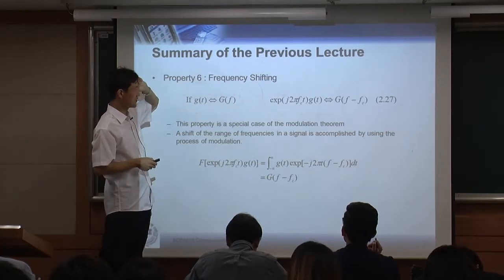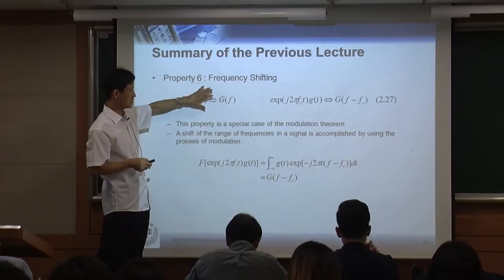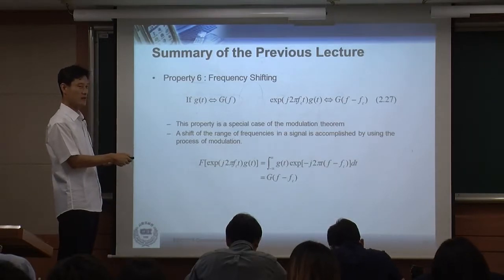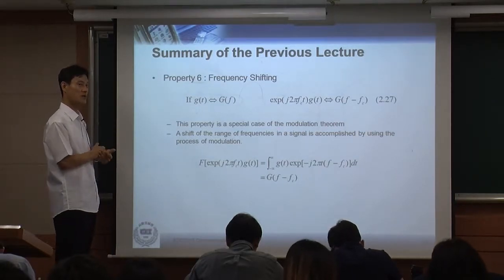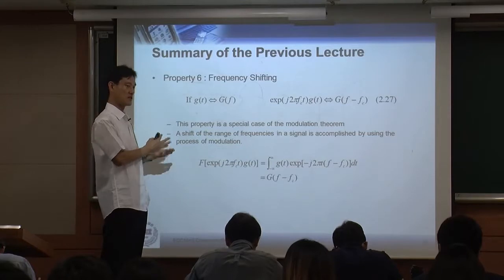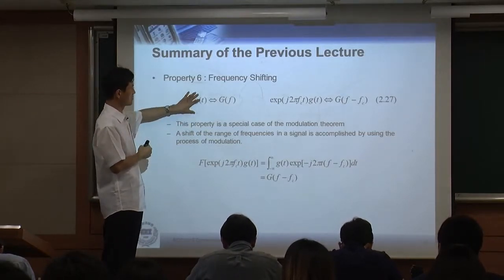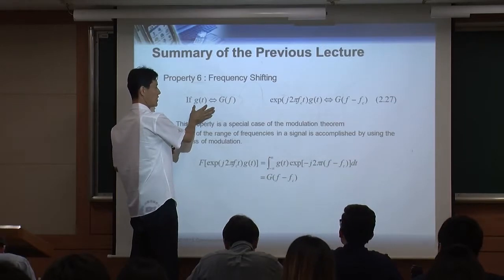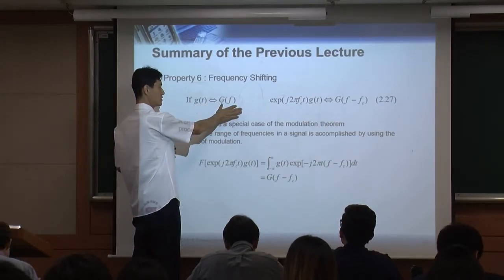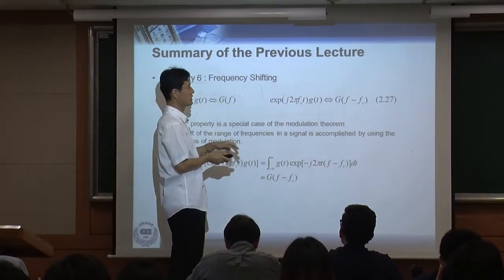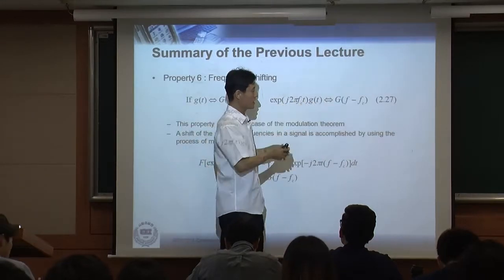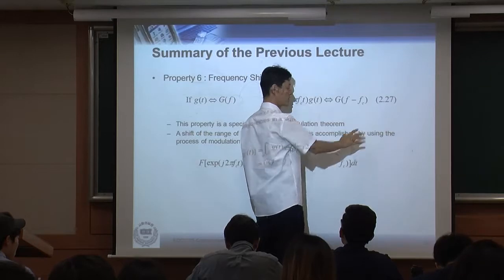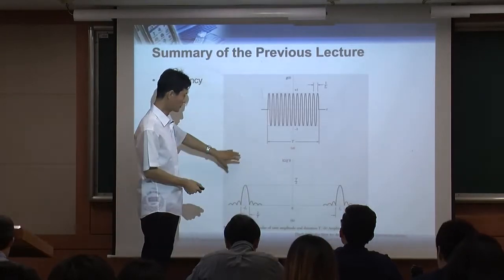Property 6, frequency shifting, is related to modulation — we'll talk about modulation next week. When you have a time-domain signal and its corresponding frequency domain, now in the frequency domain you shift it — you change the frequency. Let's say we have a sinc function in the frequency domain; if the frequency domain is sinc, the time domain signal was rectangular.